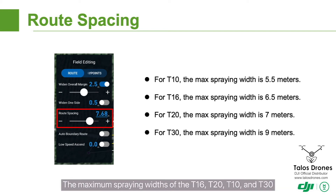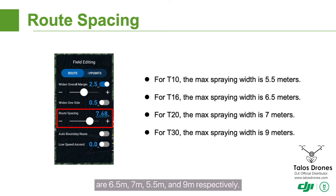The maximum spraying widths of the T16, T20, T10, and T30 are 6.5 meters, 7 meters, 5.5 meters, and 9 meters, respectively.